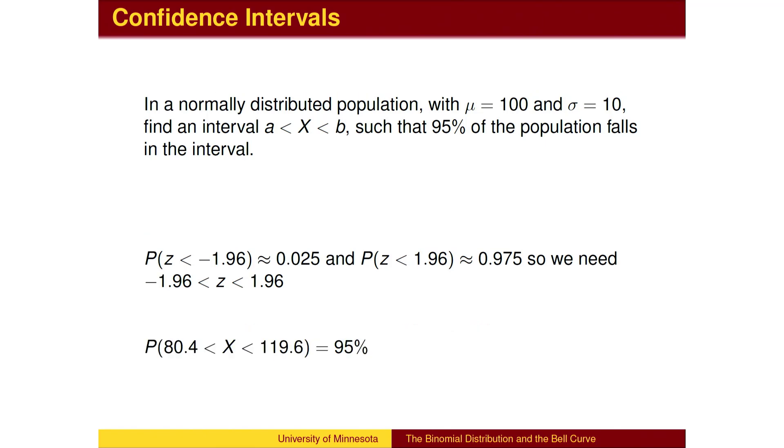Therefore, the confidence interval that contains 95% of the population runs from 80.4 to 119.6.